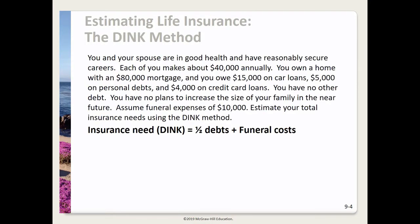Next is the DINC method example. You and your spouse are in good health with reasonably secure careers, each making about $40,000 annually. You own a home with an $80,000 mortgage, owe $15,000 on car loans, $5,000 on personal debts, and $4,000 on credit card loans. You have no other debt, no plans to grow your family, and funeral expenses are estimated at $10,000.